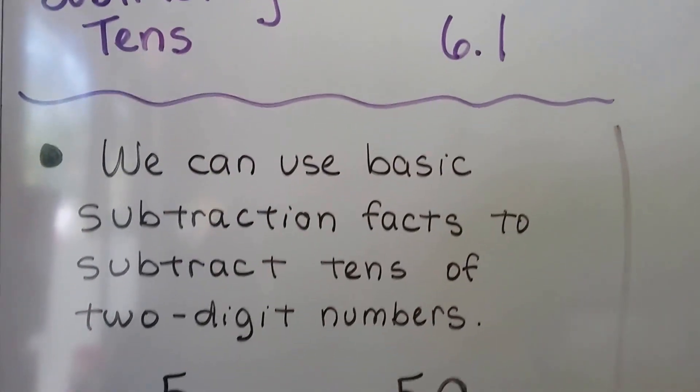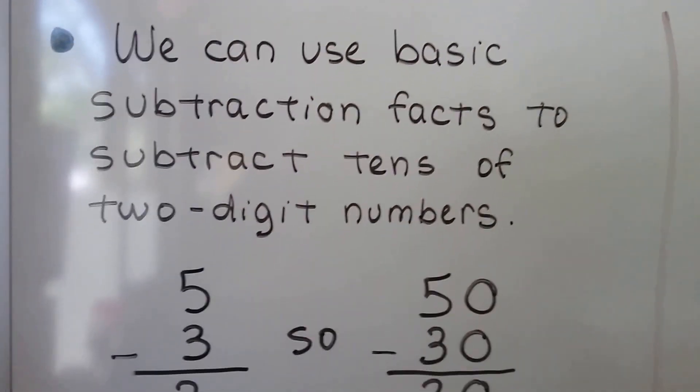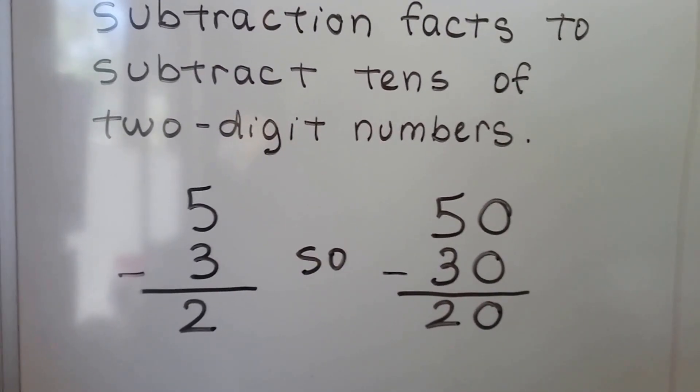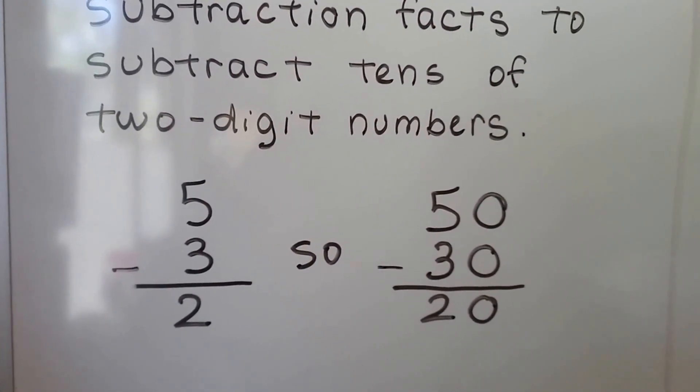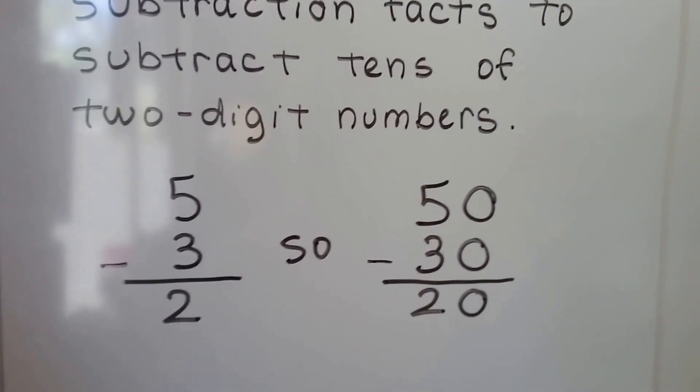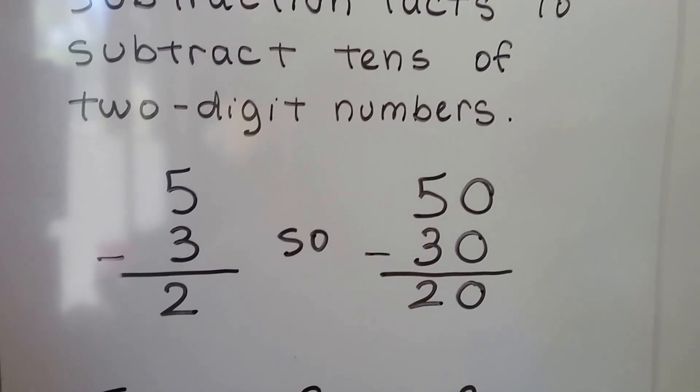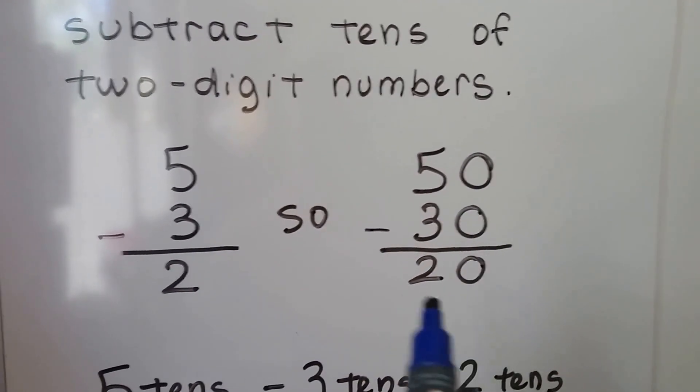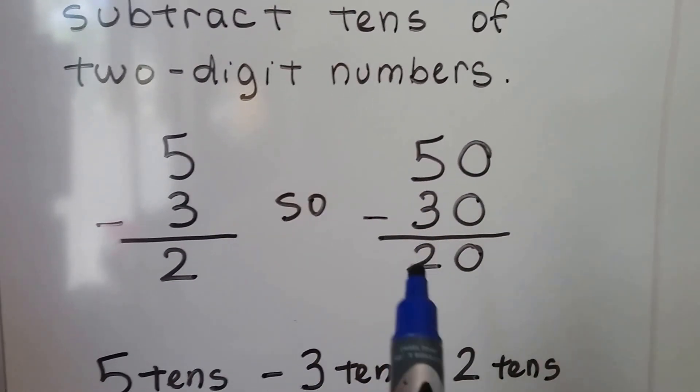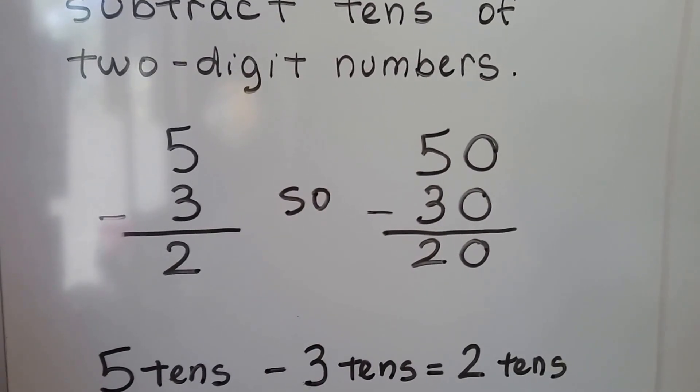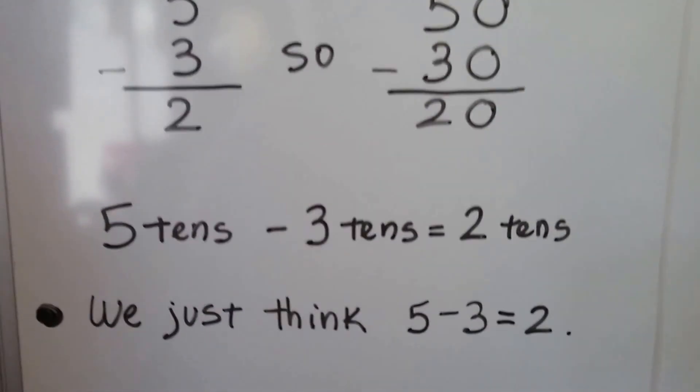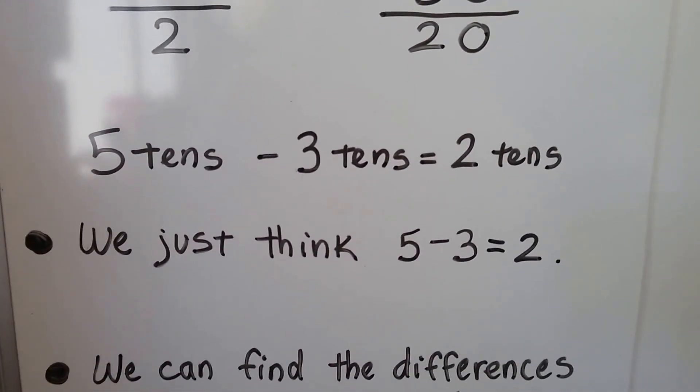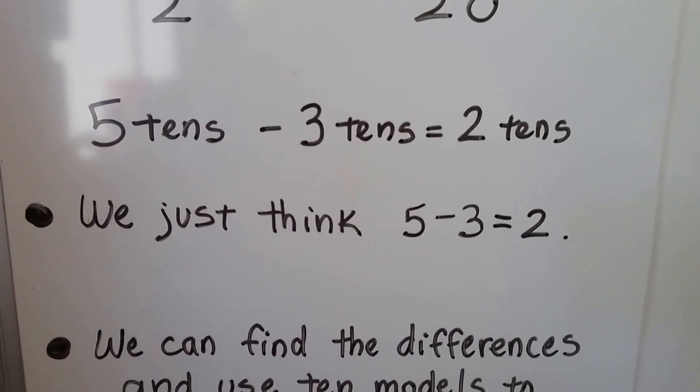We can use basic subtraction facts to subtract tens from two-digit numbers. If 5 minus 3 equals 2, that means 50 minus 30 equals 20. We have zeros in the ones place and we do 5 minus 3 is 2. So we have two tens and zero ones. Five tens minus three tens equals two tens. We just think five minus three equals two.